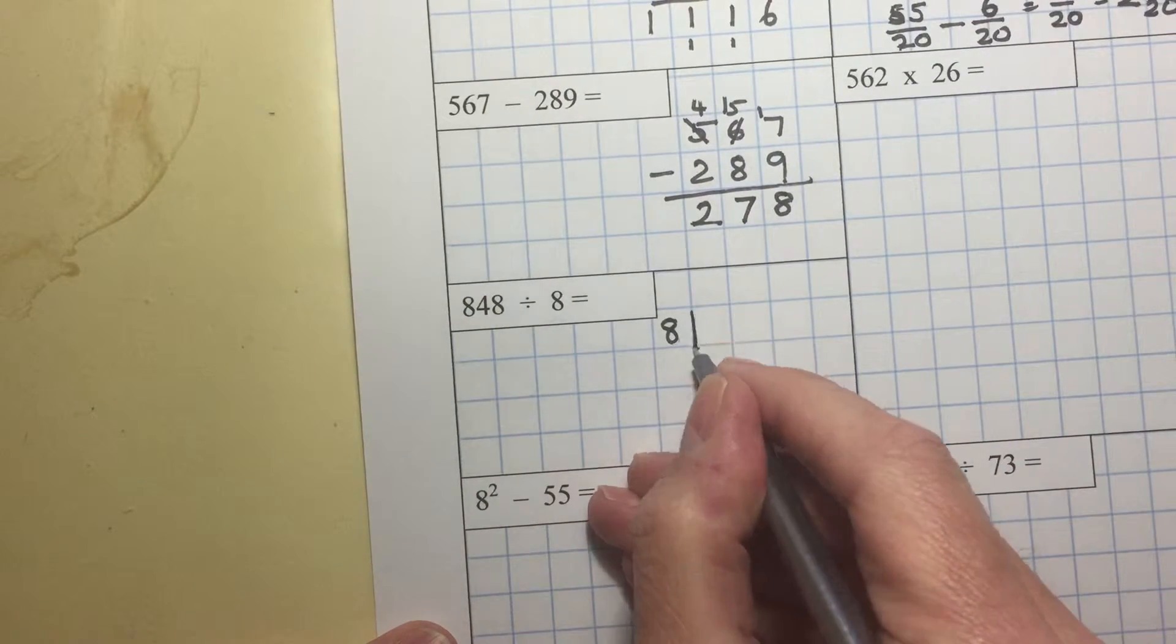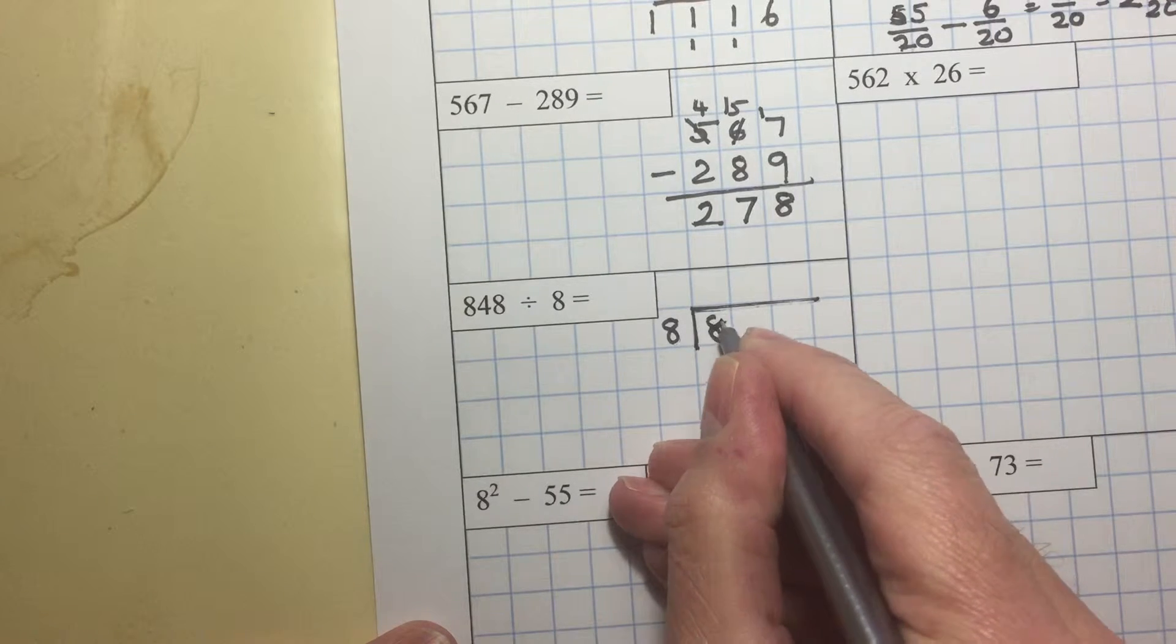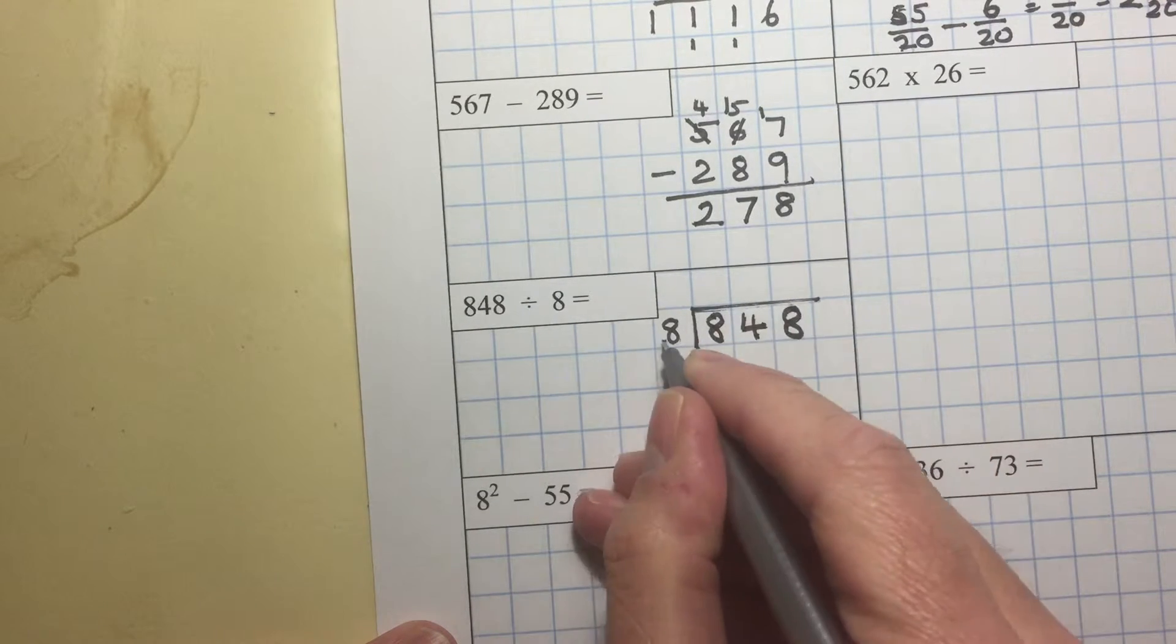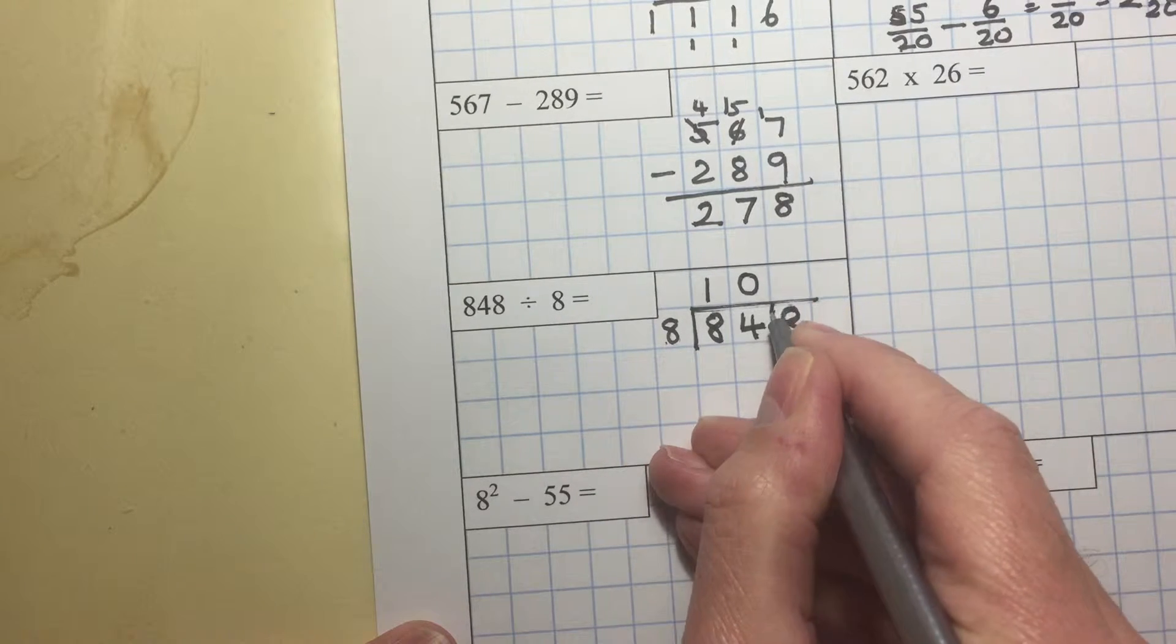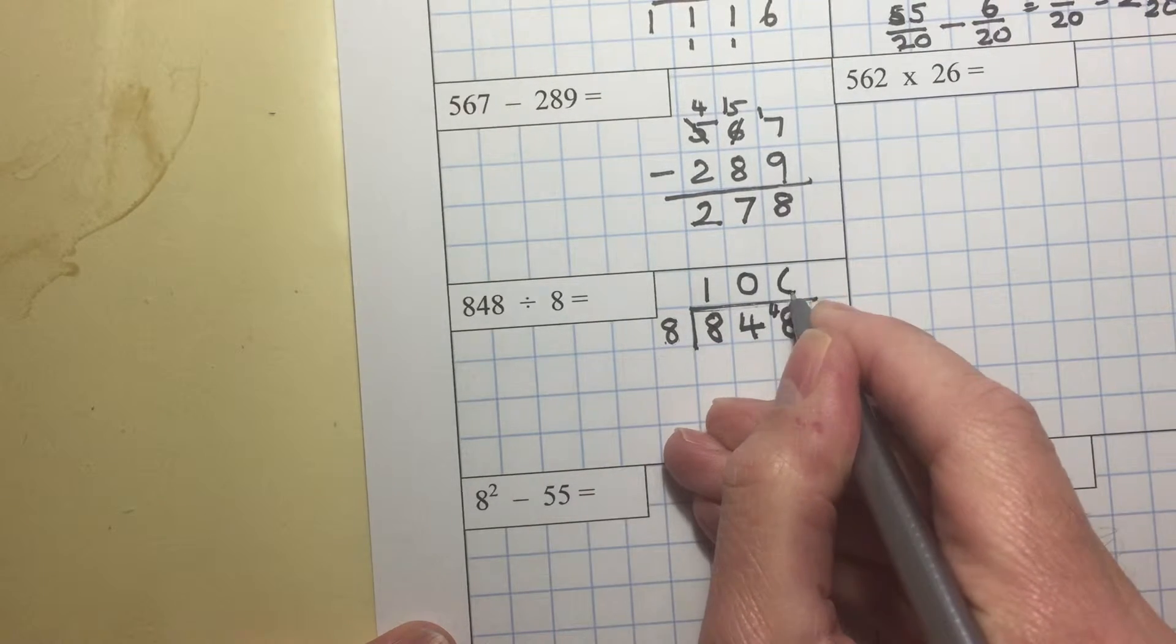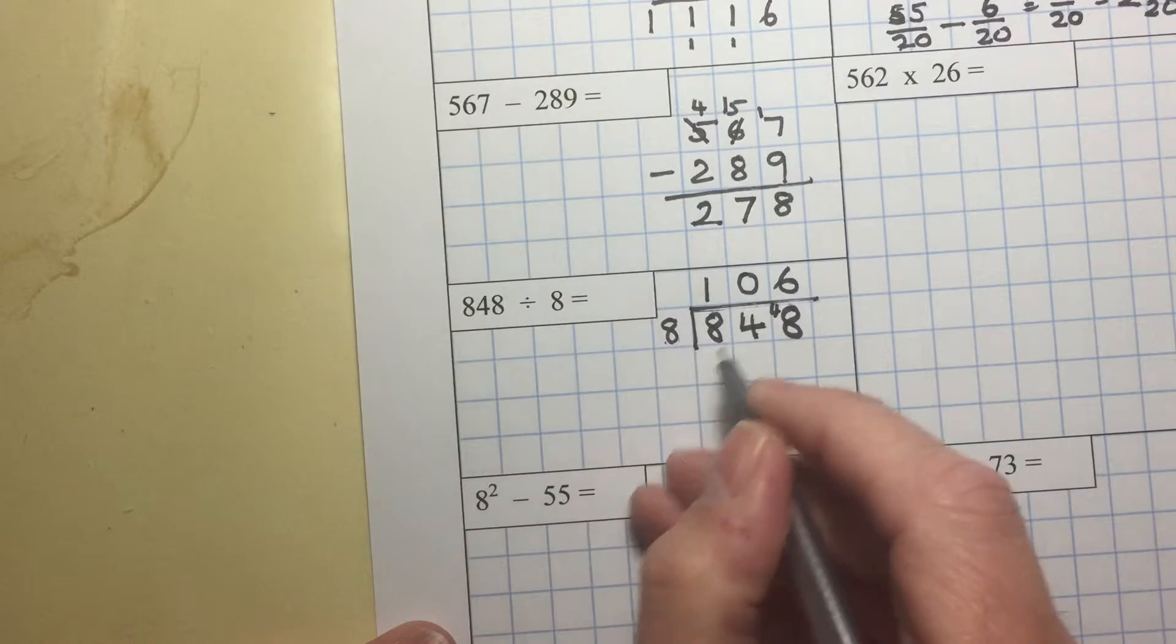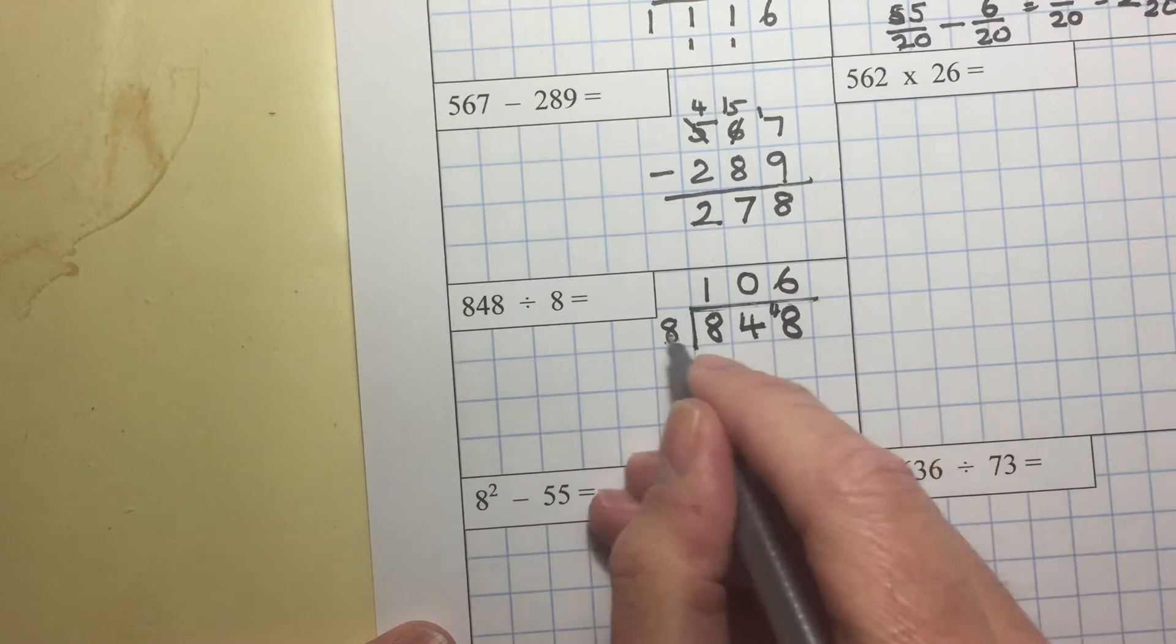8 into 848. 8 into 8 goes once. 8 into 4 won't go. 8 into 48 goes 6 times. Don't forget, put the 0 if it doesn't go.